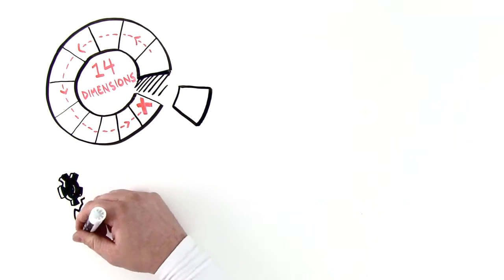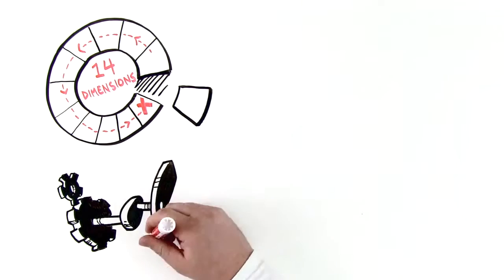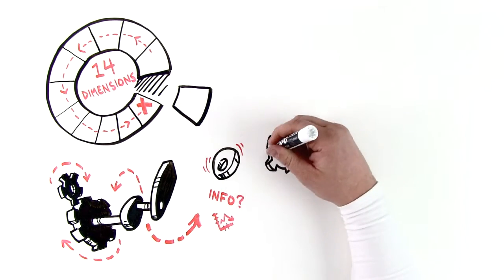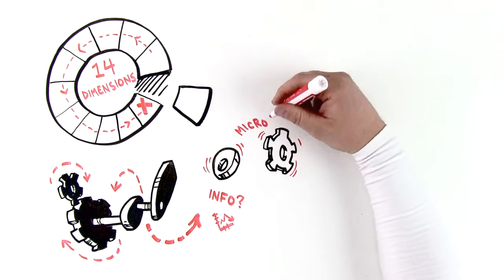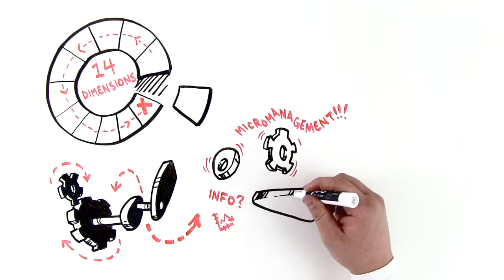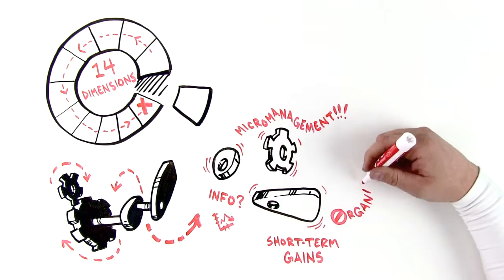If you try to innovate but you incentivize daily tasks and productivity, the organization is misaligned. If you try to optimize speed and productivity but the leadership micromanages everything, the organization is misaligned. If you want long-term sustainability but you make short-term investments, the organization is misaligned.